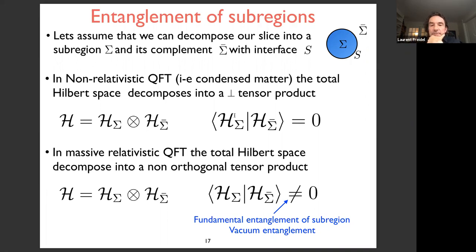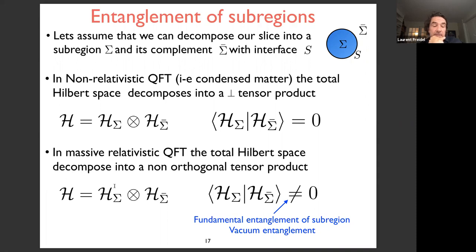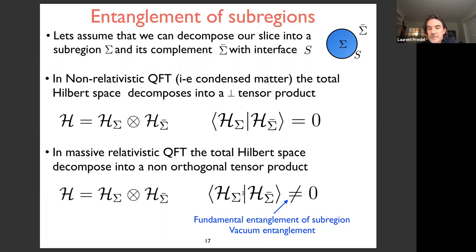In relativistic quantum field theory — as with the Unruh effect and Hawking effect — that picture is no longer valid. The Hilbert space can still be decomposed as a tensor product as a vector space, but the physical Hilbert spaces are not orthogonal to each other. The scalar product does not vanish, and this is the expression of fundamental entanglement of sub-regions, or vacuum entanglement — the relativistic vacuum is maximally entangled.